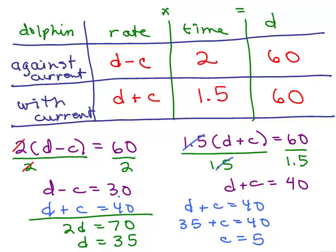35 plus 5 is 40 and of course you would get the same thing if you did 35 minus 5 is going to be 30. So the rate of the current is 5, the rate of the dolphin is 35.